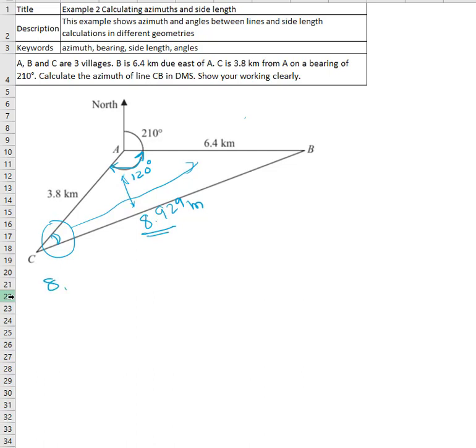8.929 over sine, the opposite angle is 120 degrees, equals 6.4.